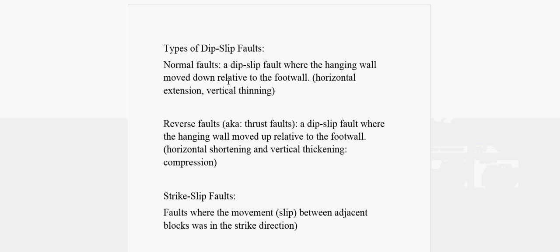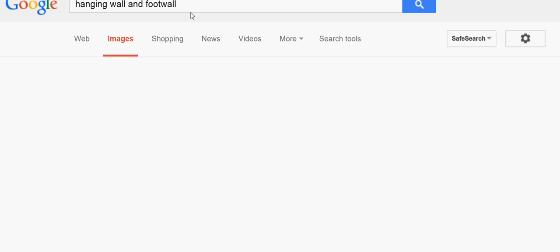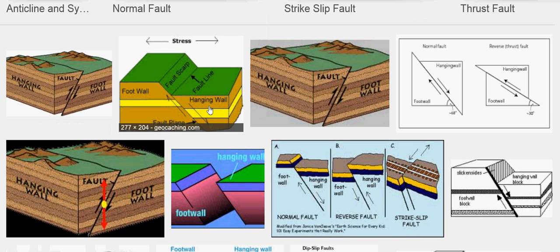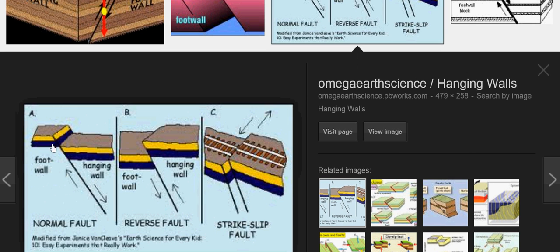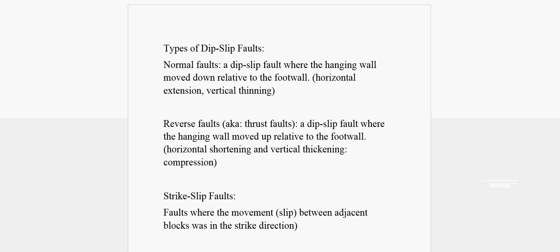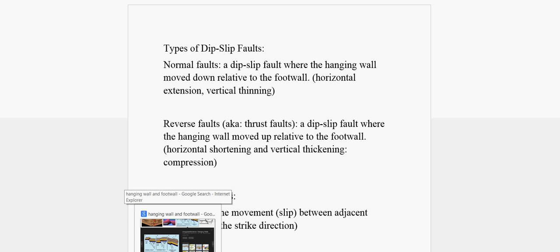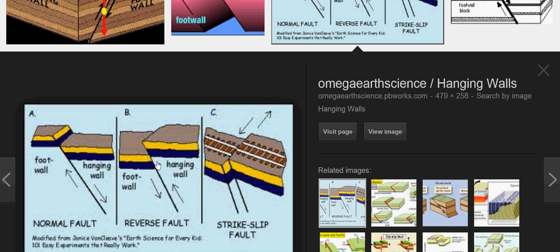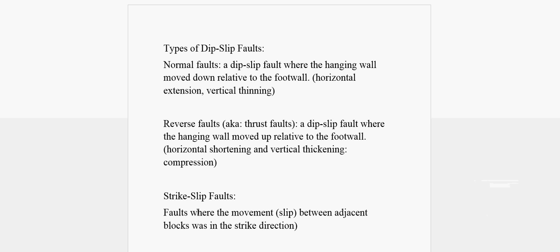A reverse fault is a dip-slip fault where the hanging wall moved up relative to the foot wall. Reverse faults are also known as thrust faults. The picture of the normal fault shows the hanging wall moving down relative to the foot wall, while for the reverse fault it's the opposite — the hanging wall moves up relative to the foot wall. Associated terms include horizontal shortening, vertical thickening, and compression.